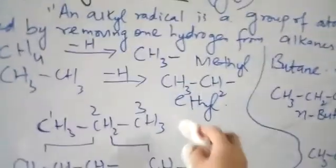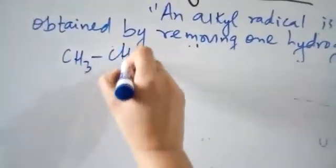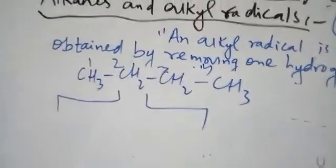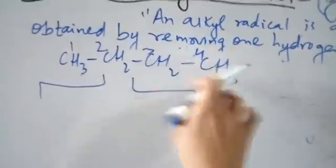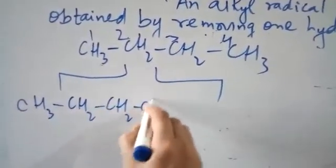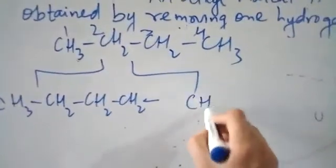For N-butane with structure CH3-CH2-CH2-CH3, there are two possibilities for removing hydrogen. If we remove from a terminal carbon, we get CH3-CH2-CH2-CH2 with a free valence — this is called the N-butyl radical. If we remove from the second carbon, we get the secondary butyl radical.